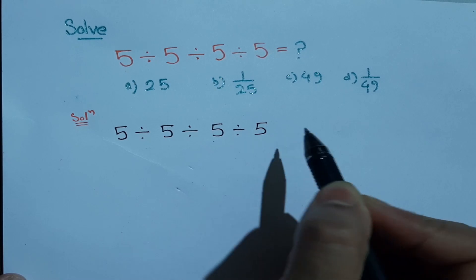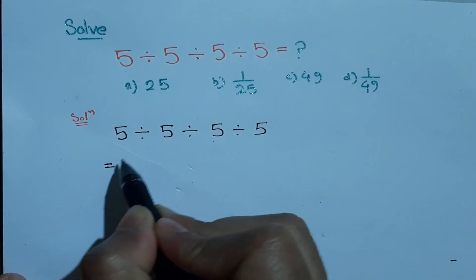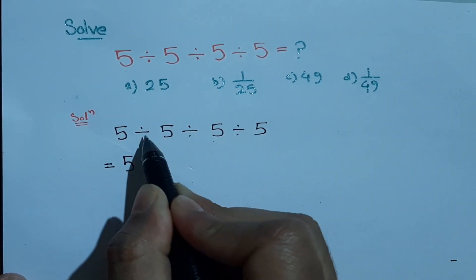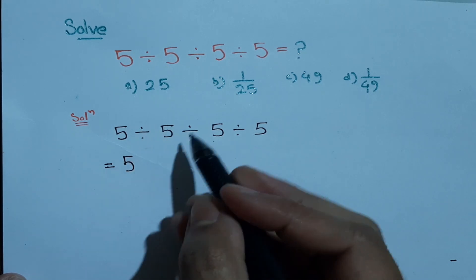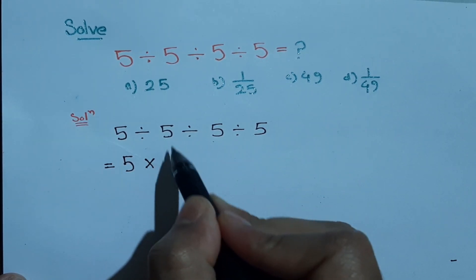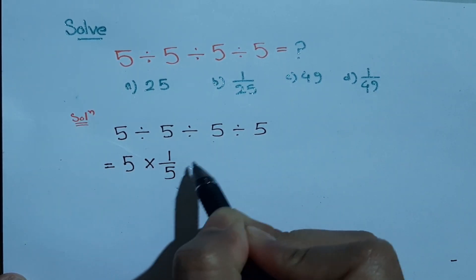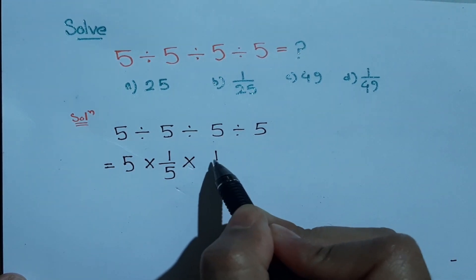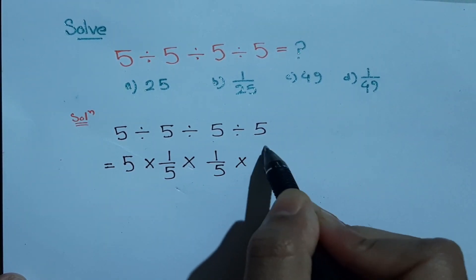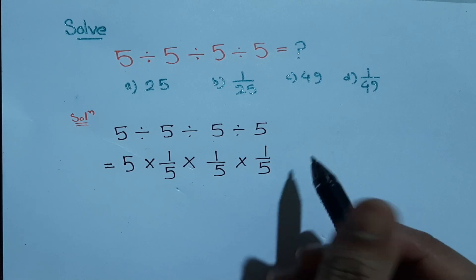Then next, let's keep this 5. If we change the division to multiplication, we have to write 1 by 5. Similarly for this one also, 1 by 5 into 1 by 5. Now we can cancel out 5 by 5.